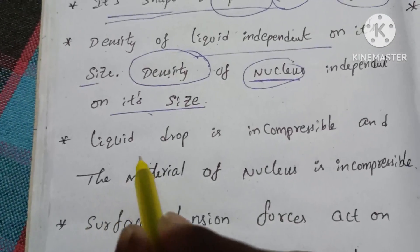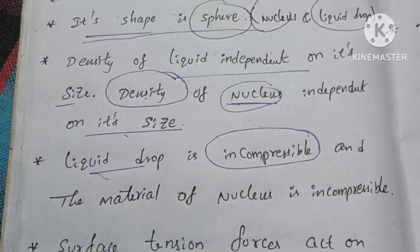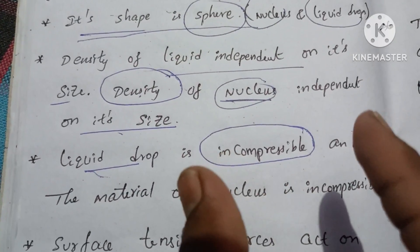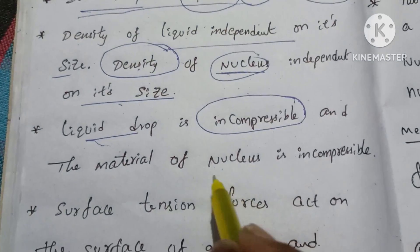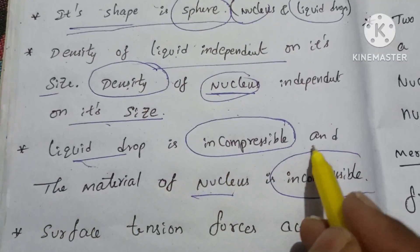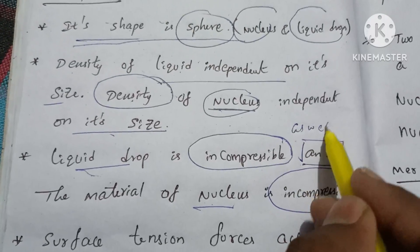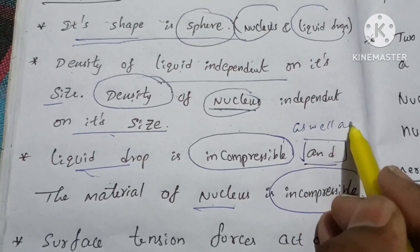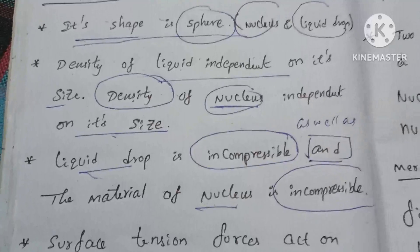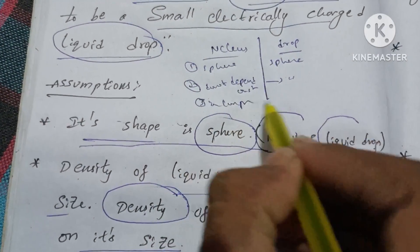The second point: the liquid drop is incompressible — we cannot compress a liquid drop. Similarly, the nucleus is also incompressible. The third point is also incompressible.